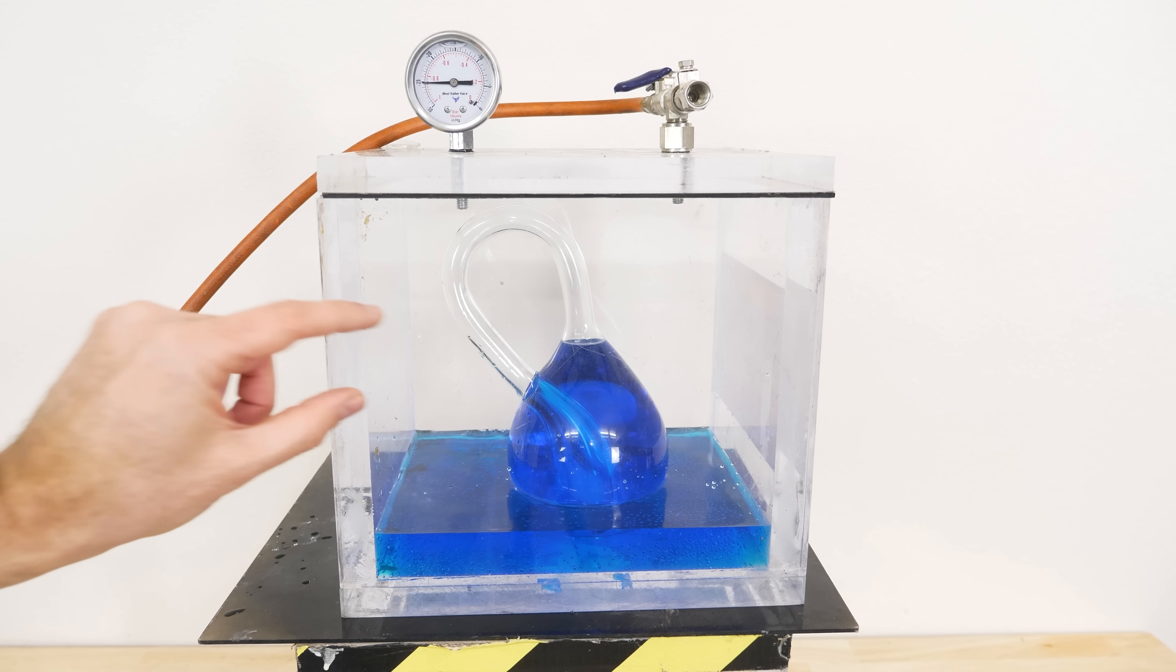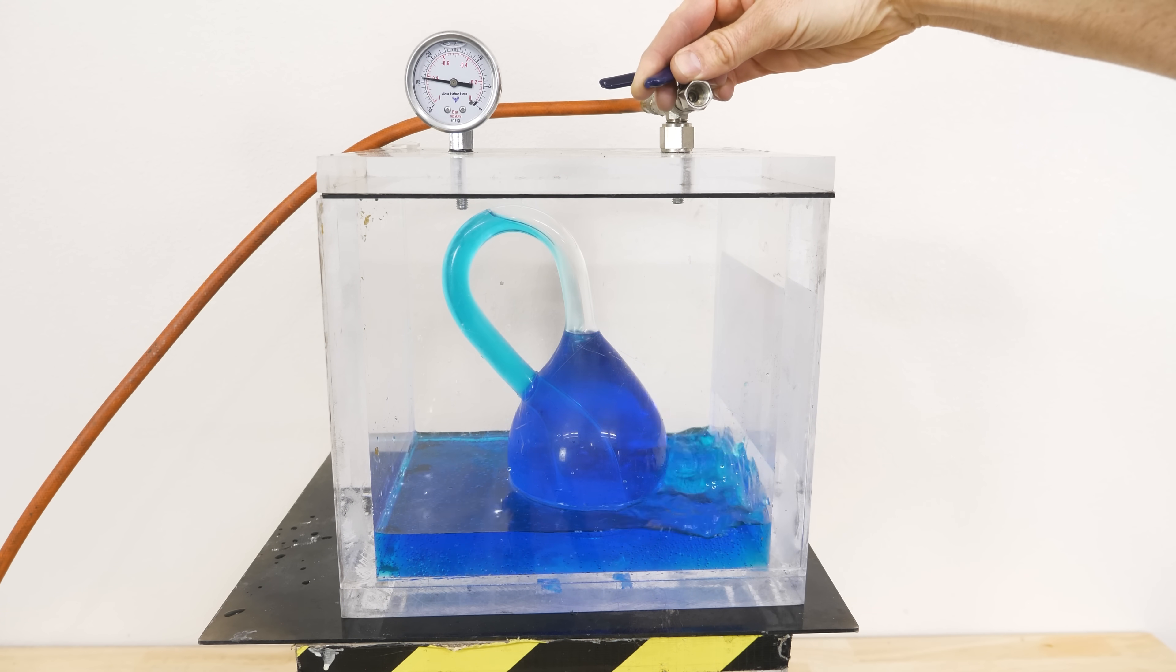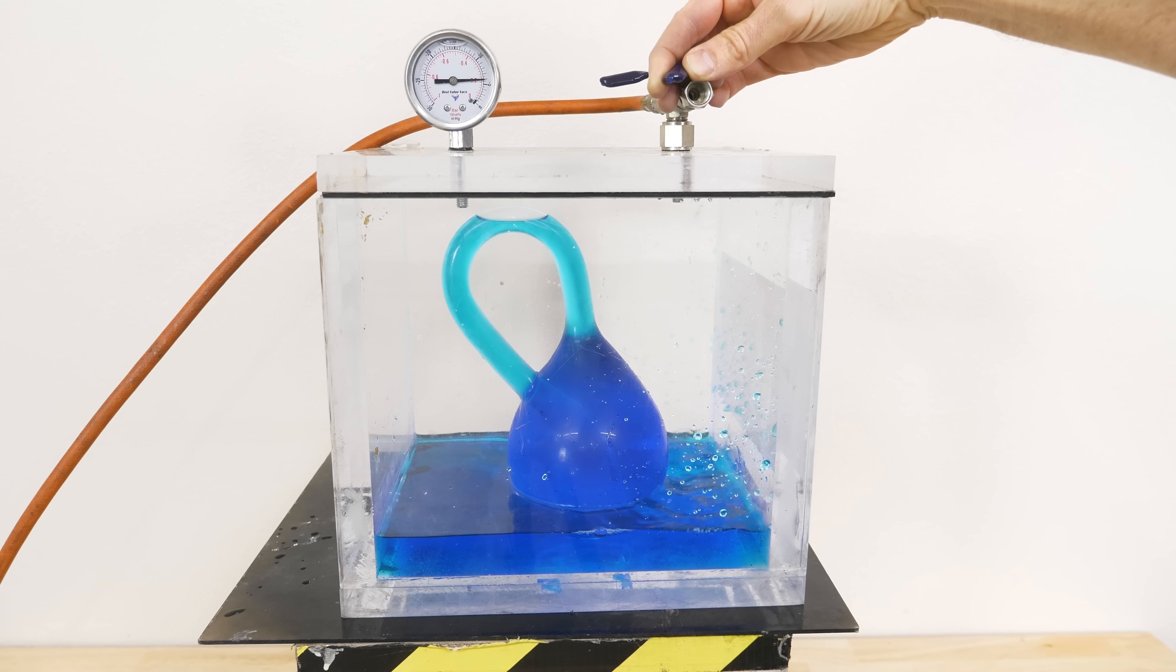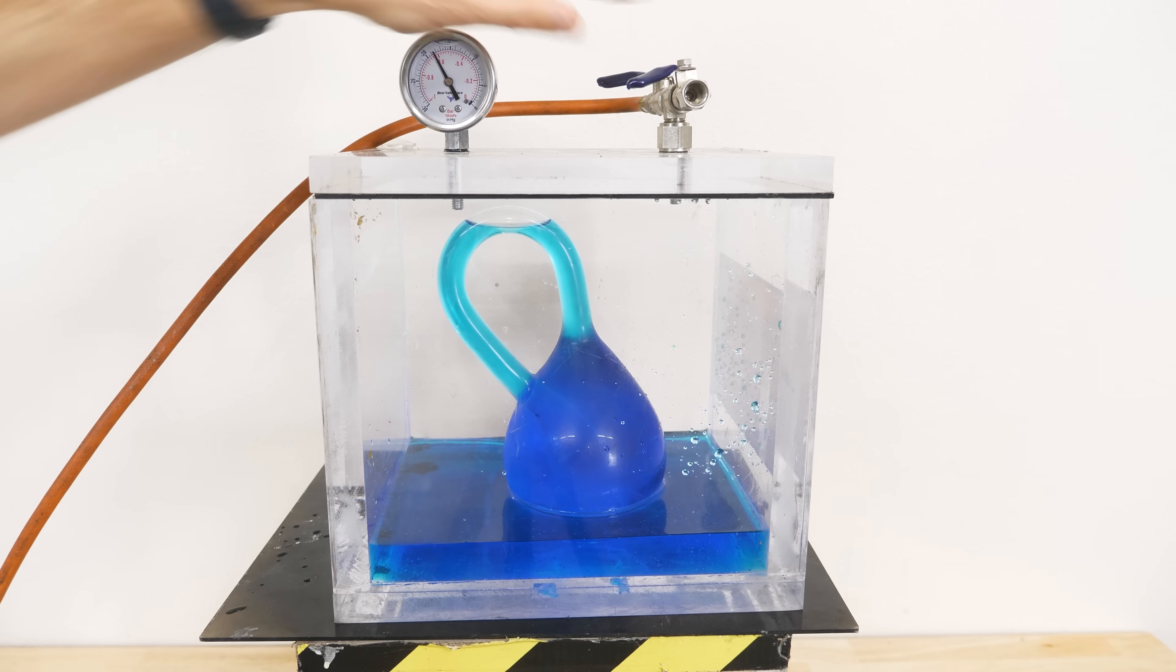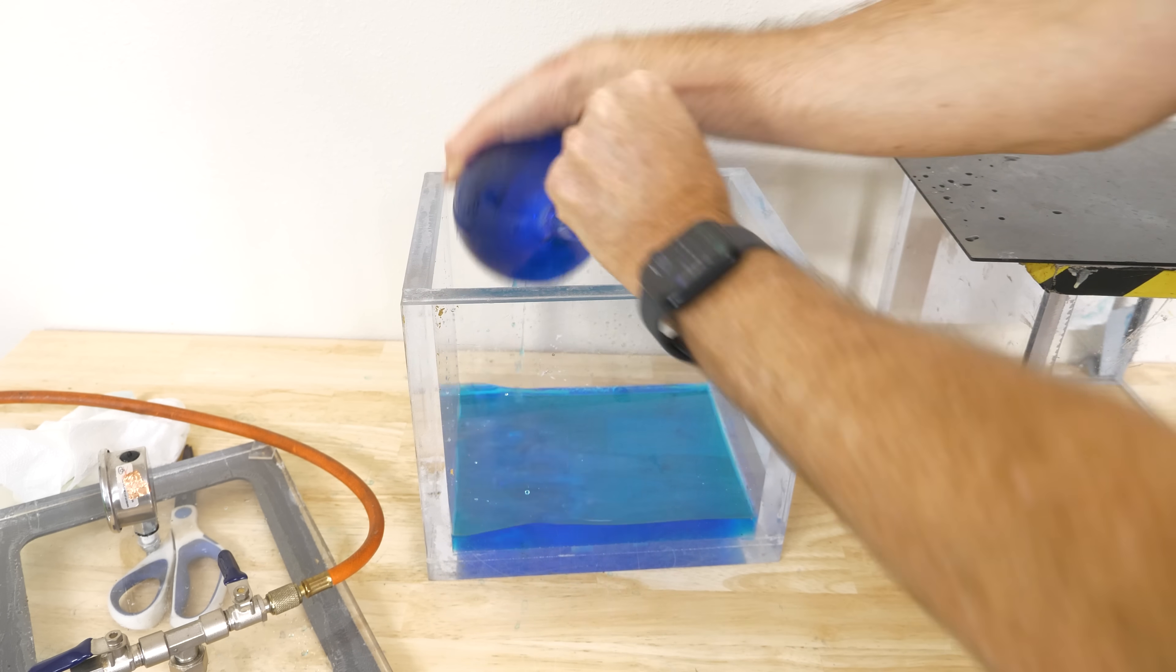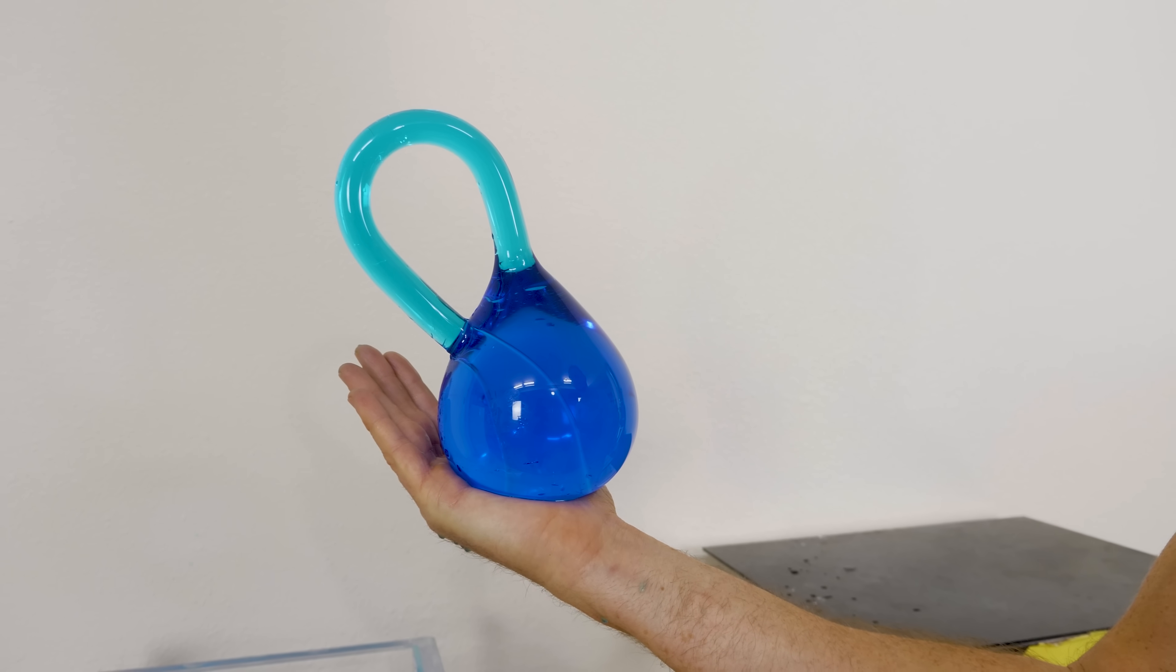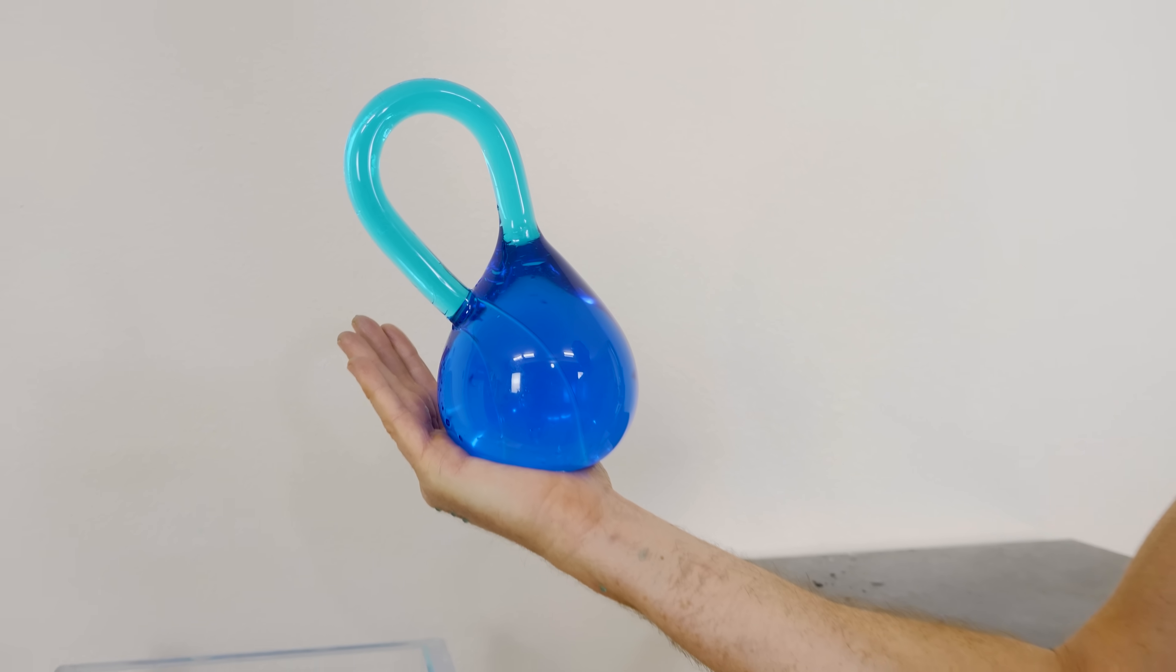Now we're taking this smaller volume of air and rarefying it again. Let's do it again. A fully filled Klein bottle. So I was able to fill a shape with no volume.